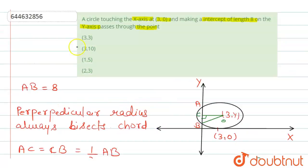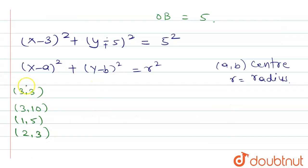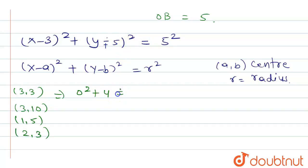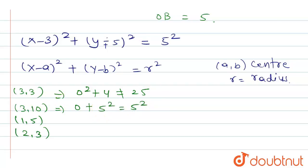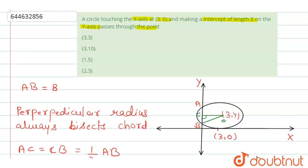Now we check the given points. For point (3, 3): (3−3)² = 0, and (3−5)² = (−2)² = 4, so 0 + 4 = 4 ≠ 25. For the plus case, (3+5)² = 64 ≠ 25. For point (3, 10): (3−3)² = 0 and (10−5)² = 5² = 25, so 0 + 25 = 25. This is correct, so option B is correct.